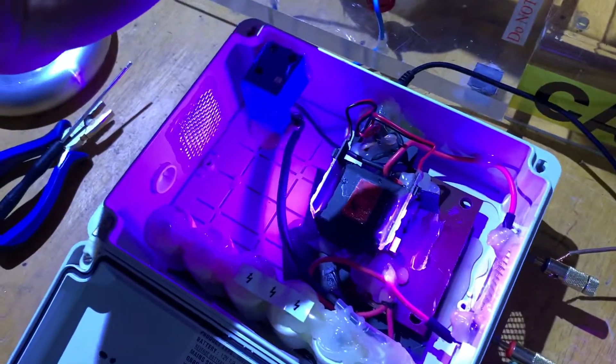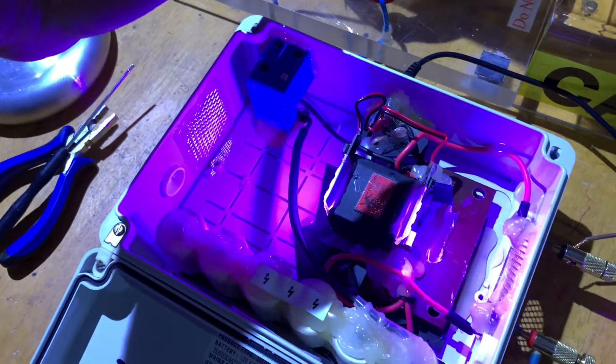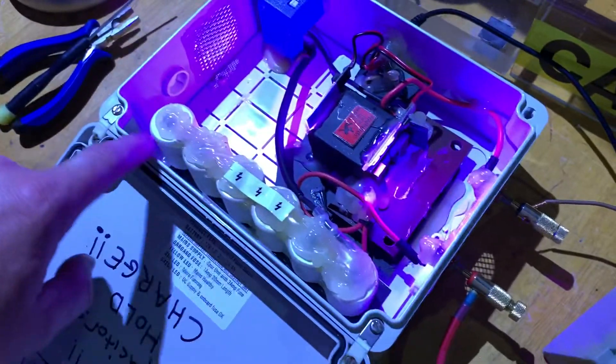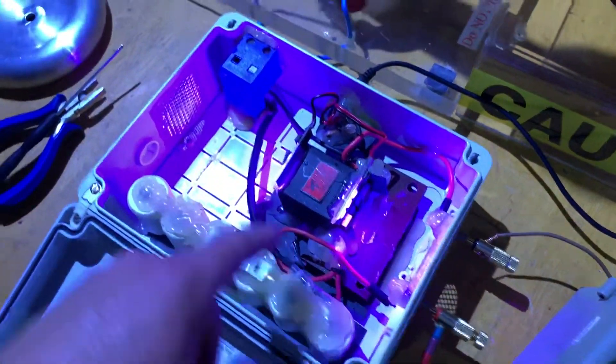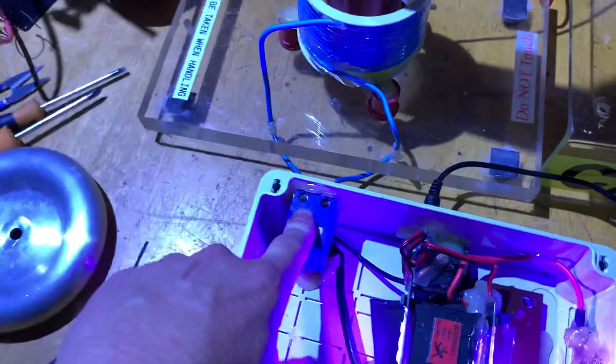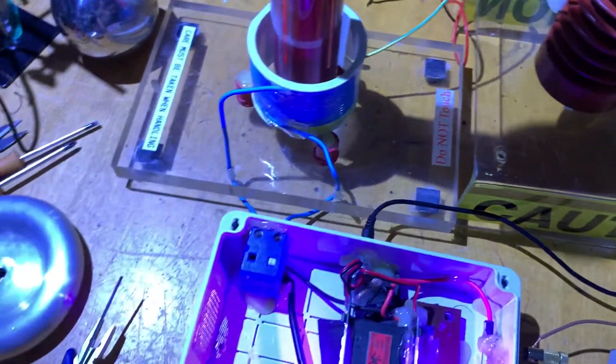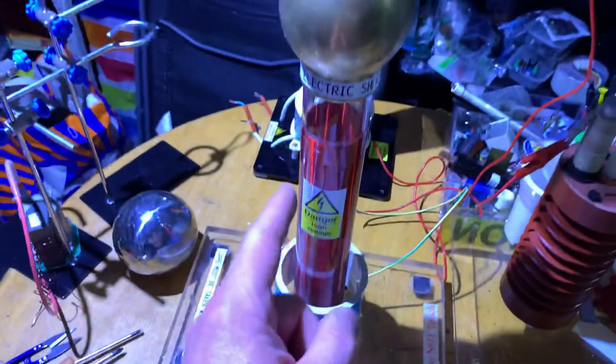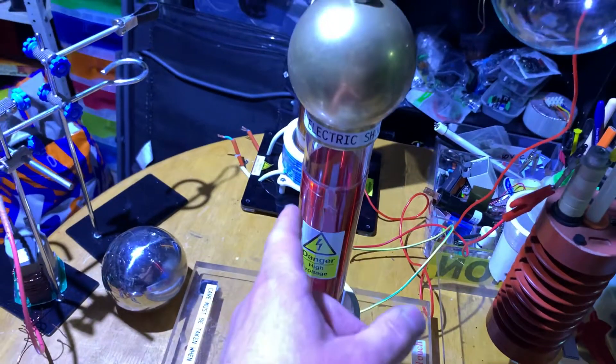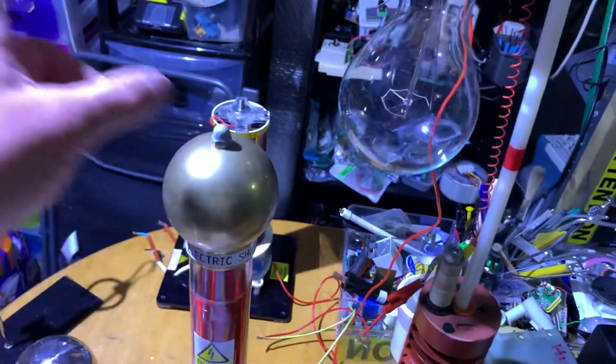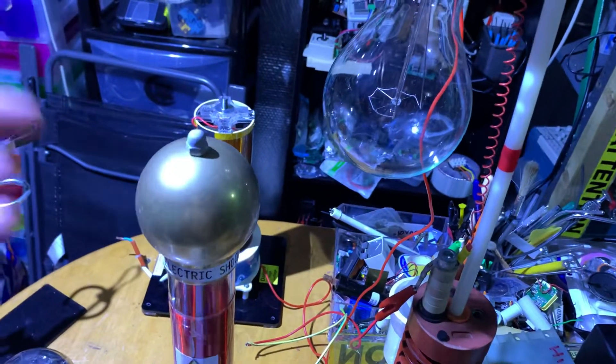When you get it right you just get that lovely color, I just love that color. Doorknob capacitors, 40 kilovolt each, and they all go out to the output here which you can connect any primary coil for your Tesla coil. Got a little bit of a breakout point there just to give it spark.